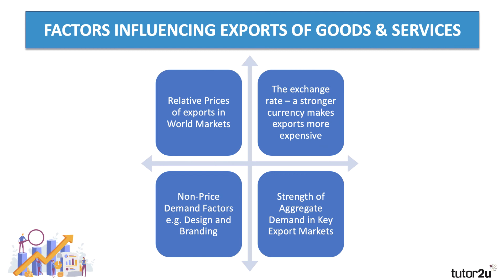Many factors affect our exports. The relative price of our goods compared to competitors in Germany, the United States, Japan, and other countries makes a difference. The exchange rate is also quite important. Typically, for example, a strong pound against the dollar or the euro makes our exports more expensive overseas and makes imports coming into the UK cheaper, which can affect the export sector.